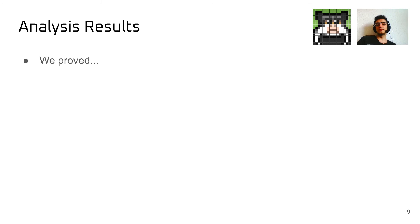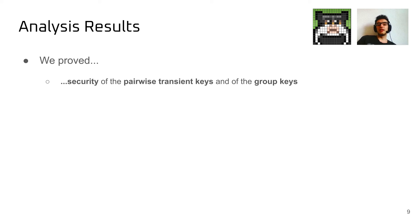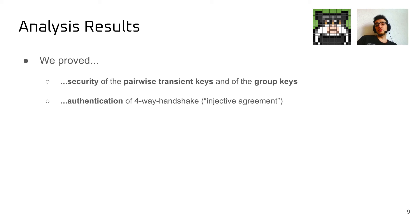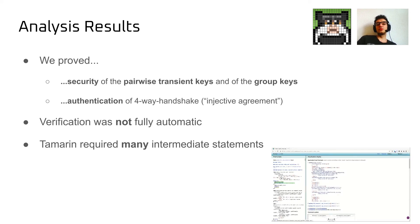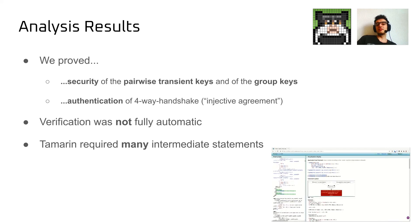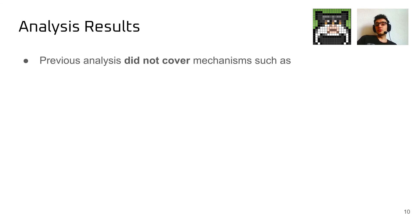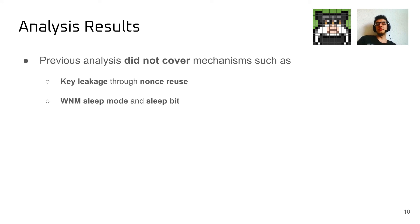So what did we actually end up proving? We proved the security of the pairwise transient keys and the group keys used in WPA2. We also proved the authentication of the four-way handshake, meaning that a client is successfully authenticated against the access point after having executed the four-way handshake with it. This verification was not done automatically — we needed a lot of intermediate statements, so-called lemmas, to have the Tamarin prover prove those statements. At times, we even needed to prove some intermediate statements manually, as the Tamarin prover has a graphical user interface which allows for this.